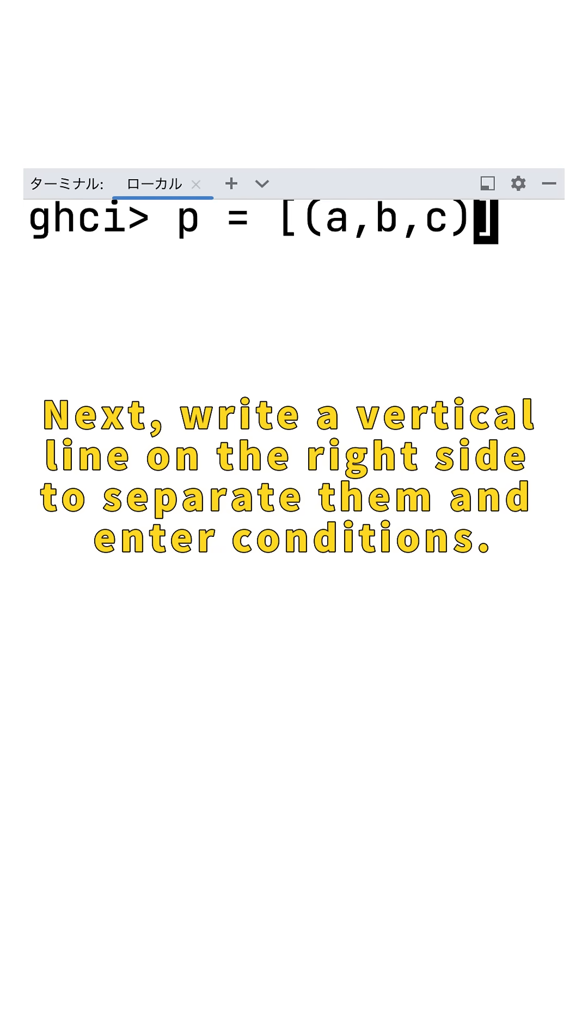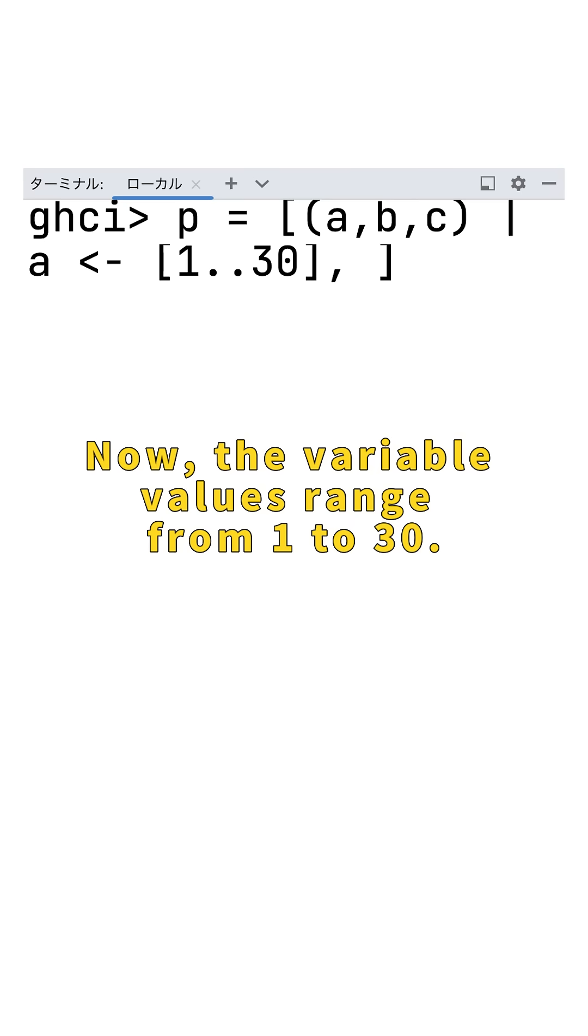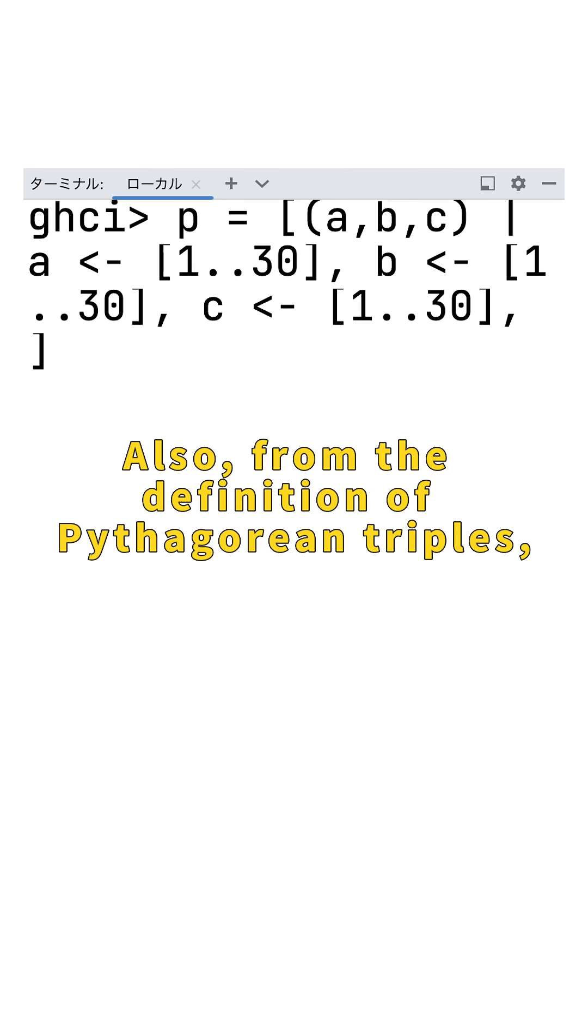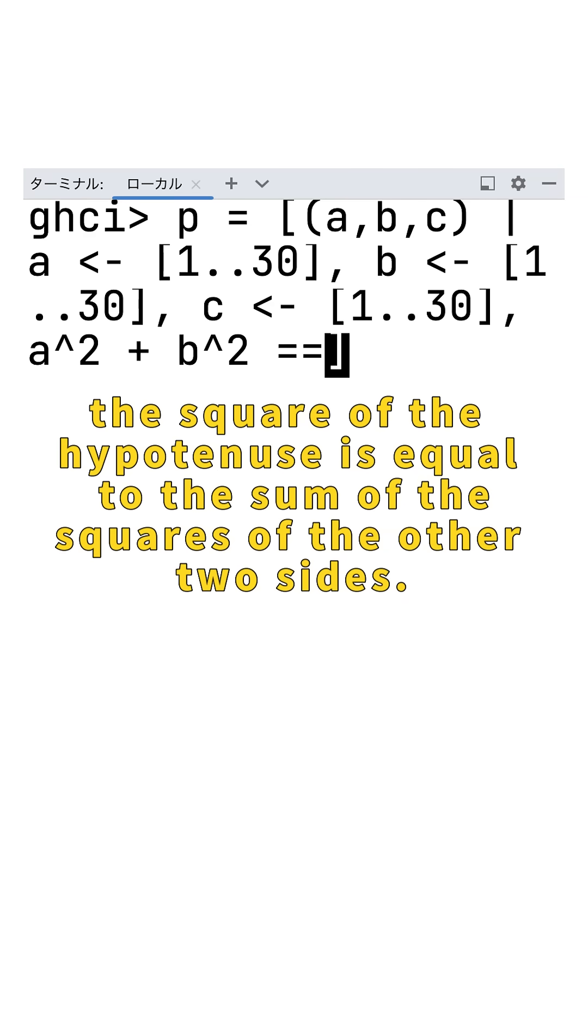Next, write a vertical line on the right side to separate them and enter conditions. The variable values range from 1 to 30. Also, from the definition of Pythagorean triples, the square of the hypotenuse is equal to the sum of the squares of the other two sides.